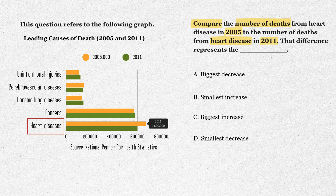The green bar in 2011 is shorter, about 600,000. So right away, we can tell heart disease deaths went down over that time period.